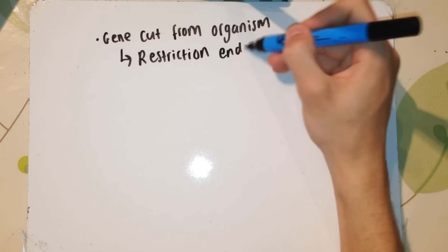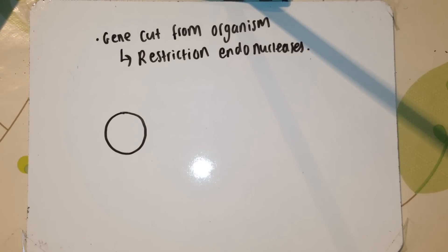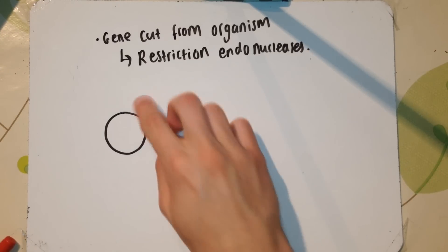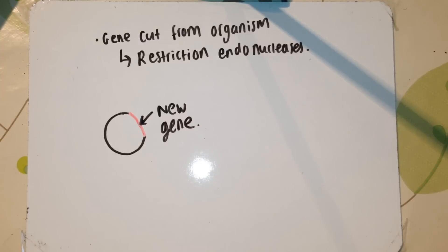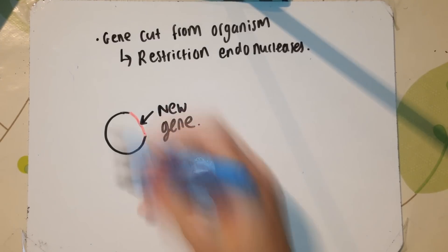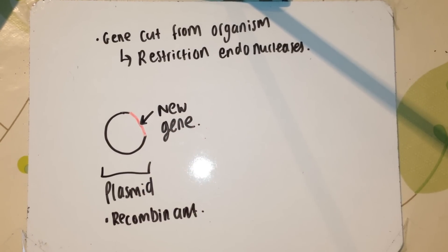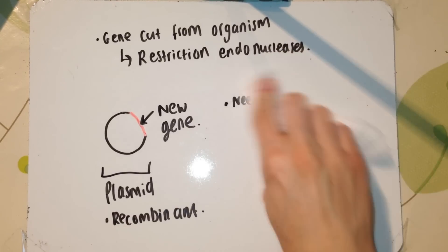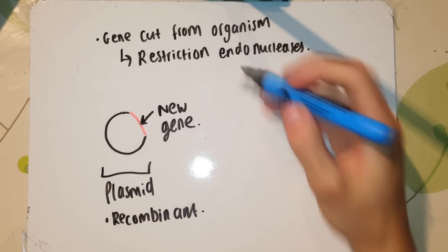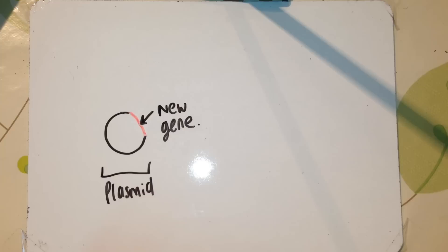Using the same restriction endonucleases, a gene can be cut from an organism. If you use the same restriction endonucleases on a plasmid, that means the plasmid will have sticky ends complementary to that gene. You can therefore insert this gene into the plasmid. DNA ligase binds the backbones together to create the final plasmid, which can then be put into bacteria to produce healthy products for humans.